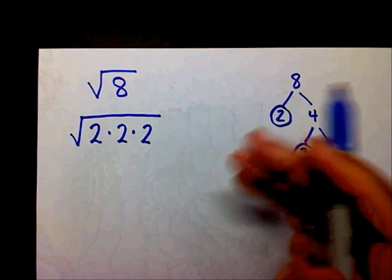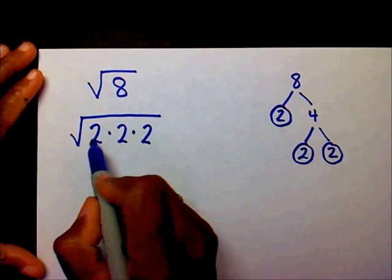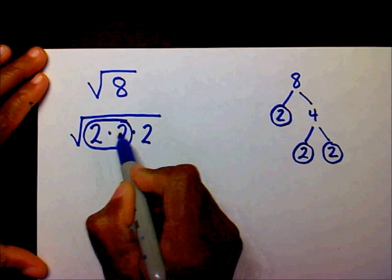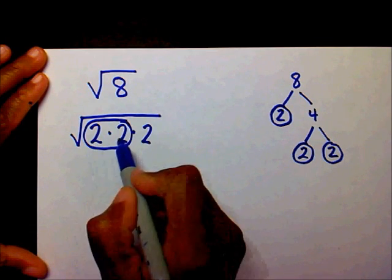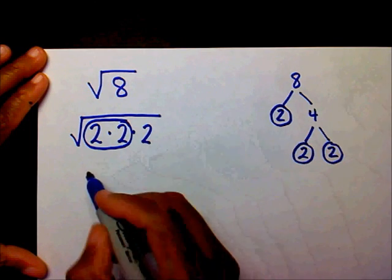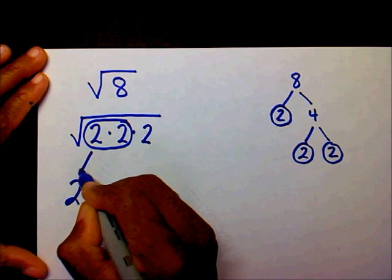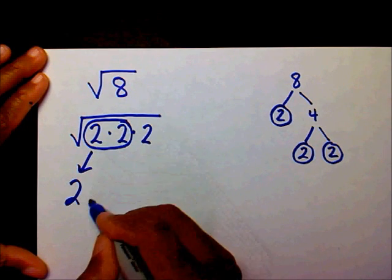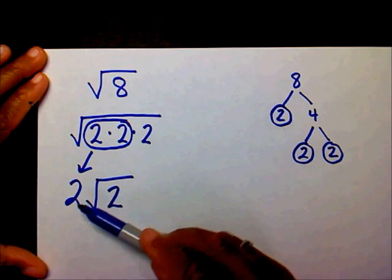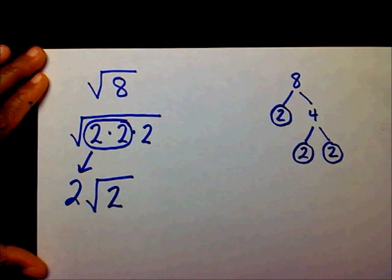Since I want to match up like constants, I'm going to circle these two constants. If you multiply 2 times 2, that gives you 4, and radical 4 is a perfect square. So on the outside, I'm going to put this 2 because radical 4 is 2, and I'm going to leave my 2 on the inside. So 2 radical 2 is another way of saying radical 8.